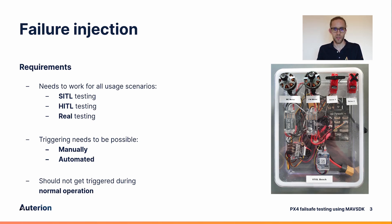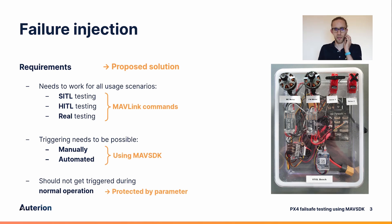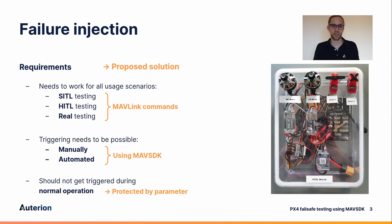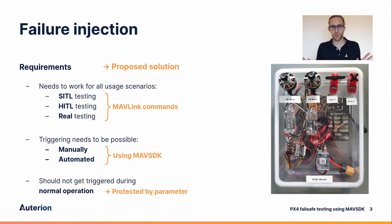We came up with a solution: to use MAVLink commands. Why? Because we already have the MAVLink interface for all of these cases — we use MAVLink for SITL, HITL, and real flying — so that just makes sense. And we can easily automate it using MAVSDK. In order to prevent accidental failure injection, the injection will be protected by a parameter. So without actually setting that parameter, all injection failures won't work — it will just fall right off.